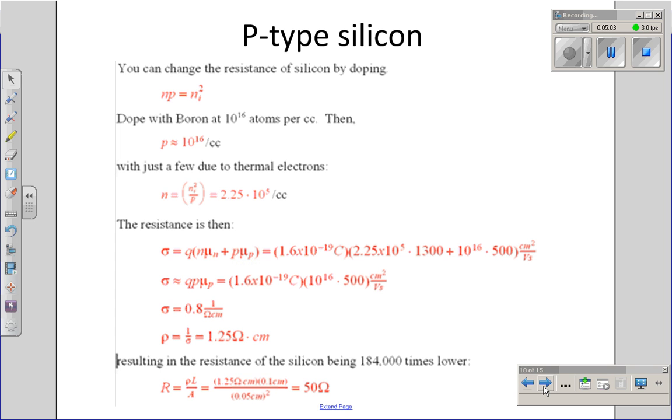However, I can change the number of charge carriers by doping it. Suppose I were to dope the silicon with boron at 10 to the 16th atoms per cubic centimeter. That may sound like a lot, but you have to remember Avogadro's number is 10 to the 23rd atoms per cubic centimeter. At 10 to the 16th atoms, I only have one out of 10 to the 7th atoms being an impurity. The silicon crystal still behaves like a pure crystal piece of silicon.